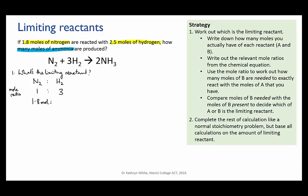Now the mole ratio is 1 to 3 so to find the amount of hydrogen that would be needed to react exactly with 1.8 moles of nitrogen we just multiply that by 3. That gives us 5.4 moles of hydrogen.